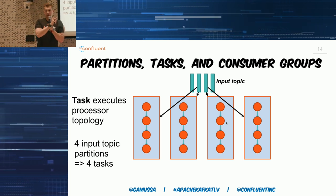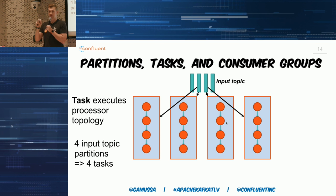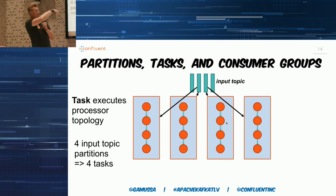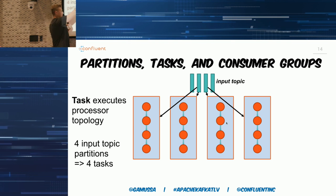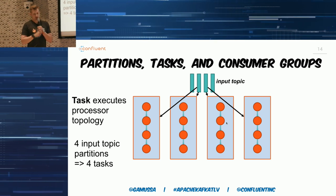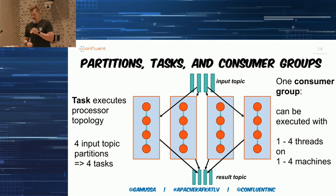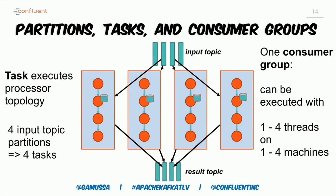Each individual partition will be consumed by a particular task. Kafka Streams is not a batch system — it performs all topology operations for each individual message. A new message goes from source to sync and so on; all operations are performed per message within this partition. The result is pushed to a topic that needs to have the same number of partitions as our source topic. The state store is created per task — meaning per partition — and holds information for that particular case.